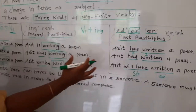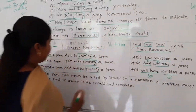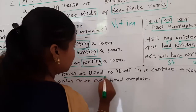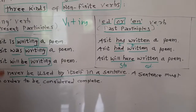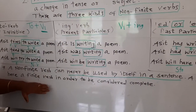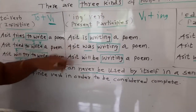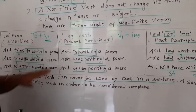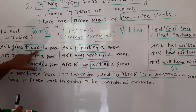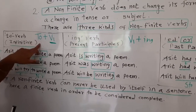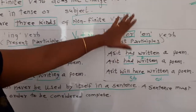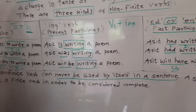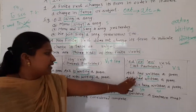So these are the types of non-finite verbs: 'to + V1' (infinitive), 'V1 + ING' (present participle), and ED or EN (past participle, which is V3). Remember that a non-finite verb can never be used by itself in a sentence, because a sentence must always have a finite verb. The non-finite verb is always in addition to the finite verb and never changes its form. These are the three kinds of non-finite verbs we solved today.